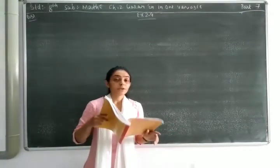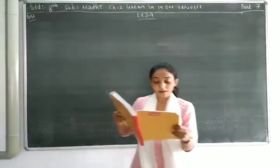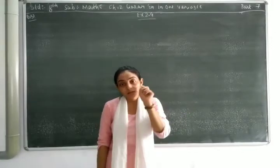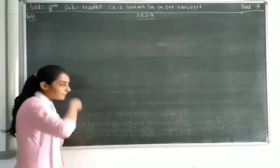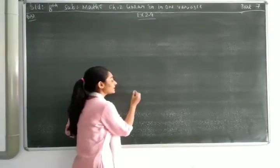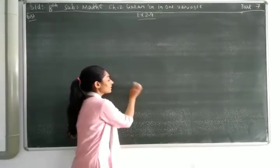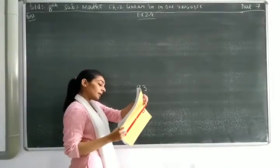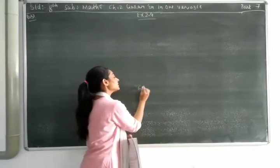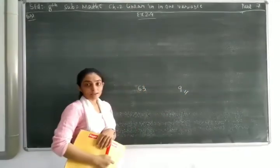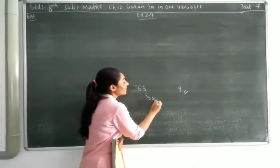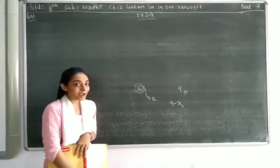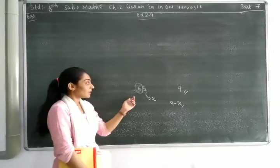Now this question is about the sum of digits. For example, that number is say 93 — you can take any number. The sum of digits is 9. If this one is my unit place x, it means the other digit should be 9 minus x. So 9 minus x will be the tens digit.